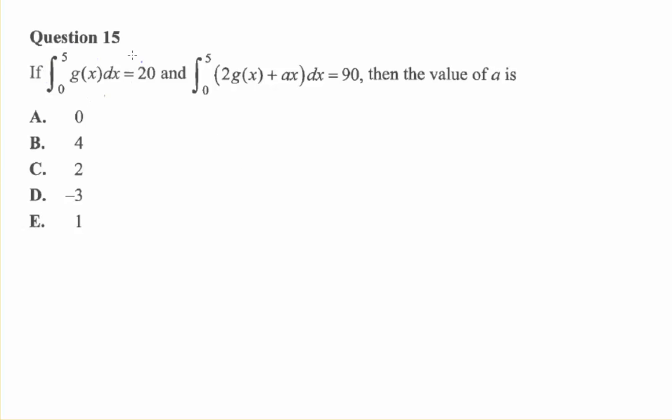So you're given a definite integral and you're given what that equals. It equals 20. Then you're given another definite integral and you're expected to find what a is. Now how do we handle this?